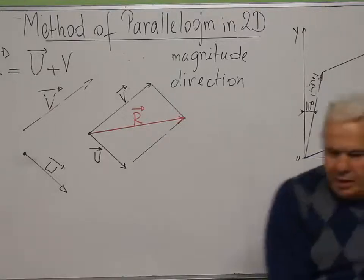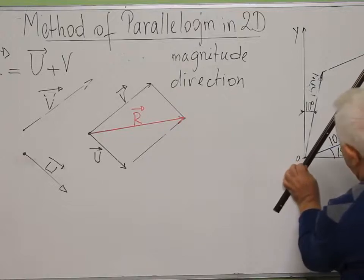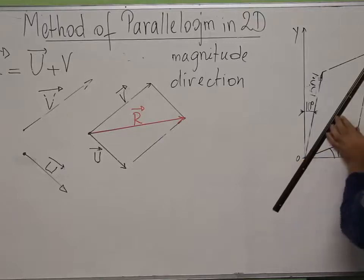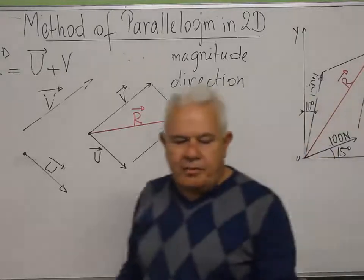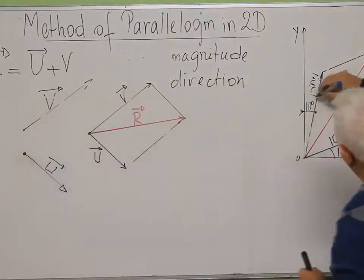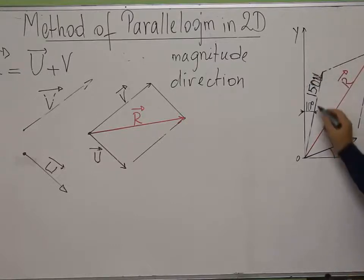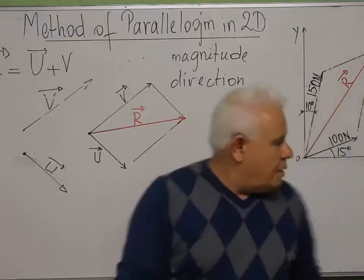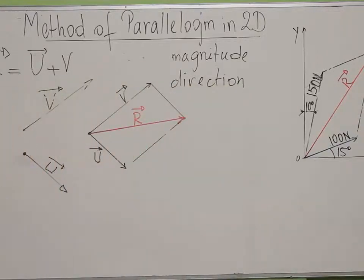My resultant R is there. In fact, R corresponds to the longest diagonal of the parallelogram. The problem has 10 degrees with the vertical and 100 newtons, and 15 degrees with the horizontal and 150 newtons.